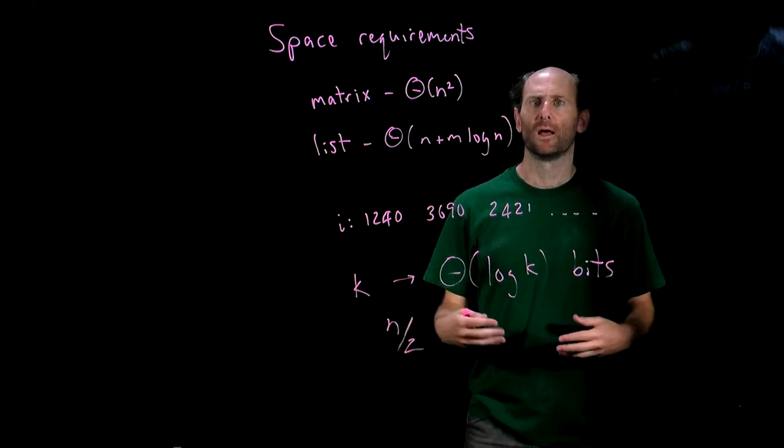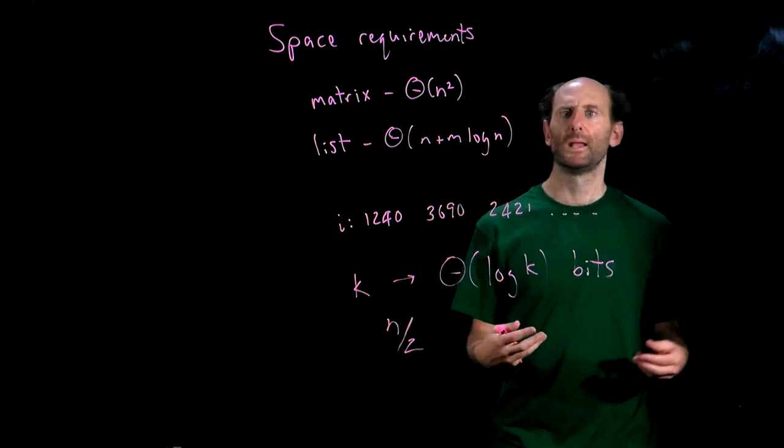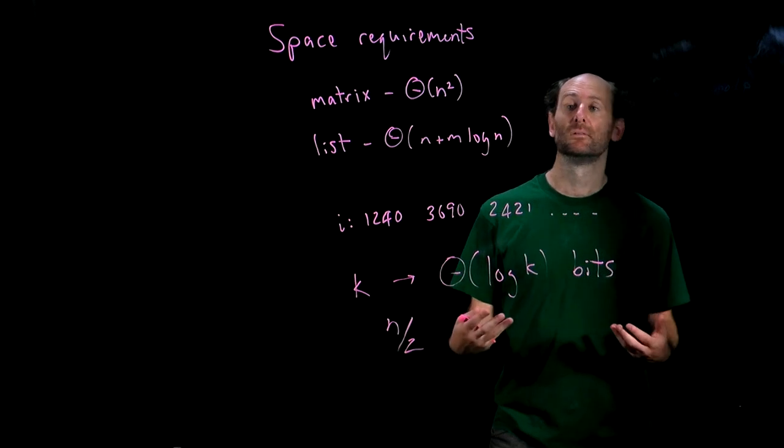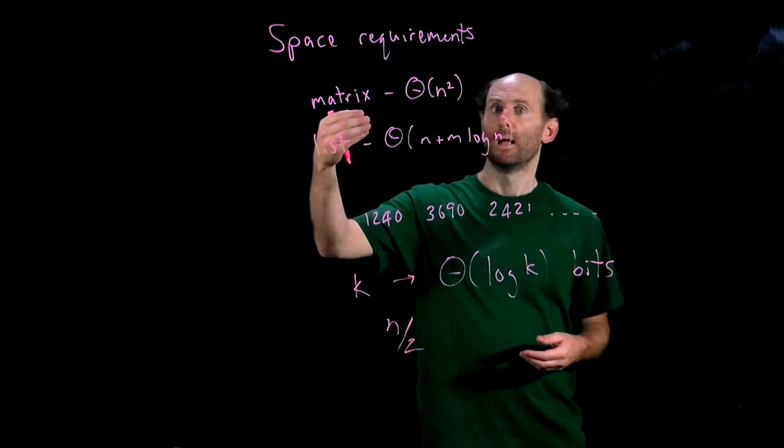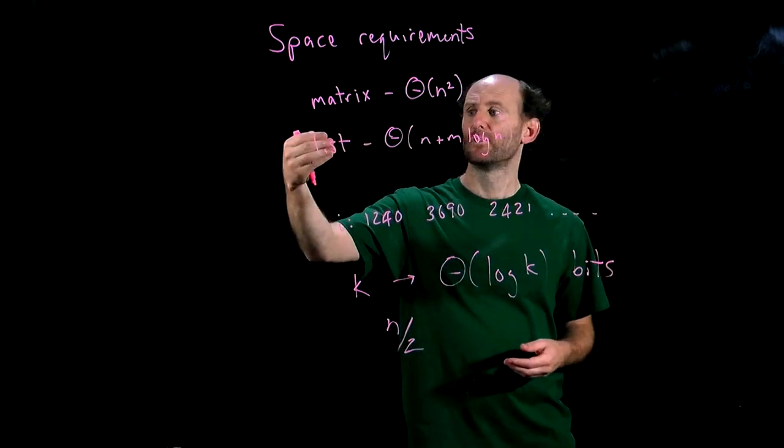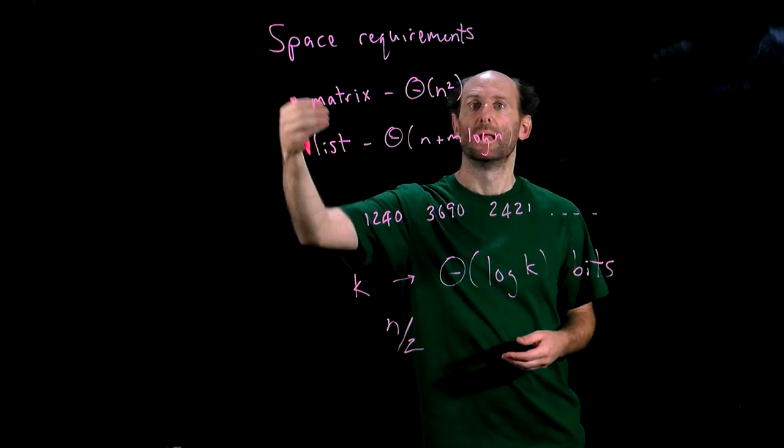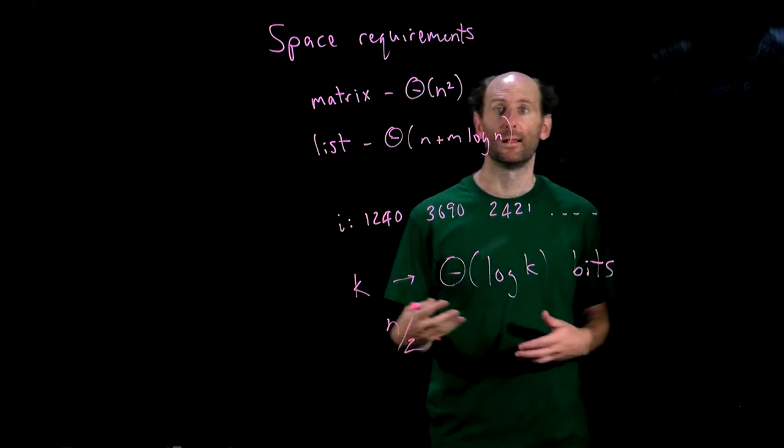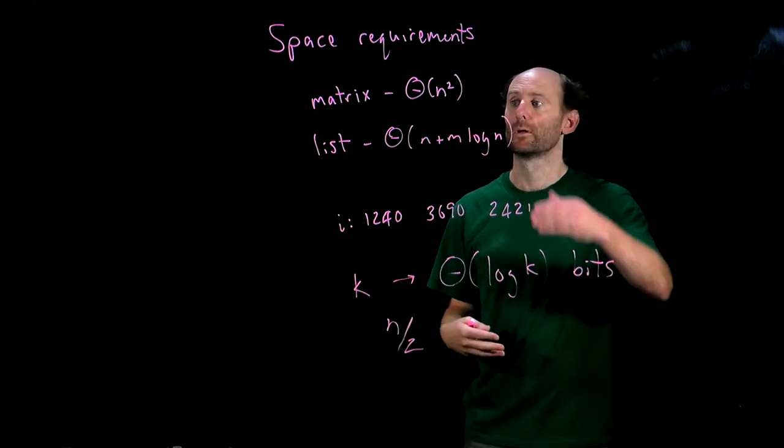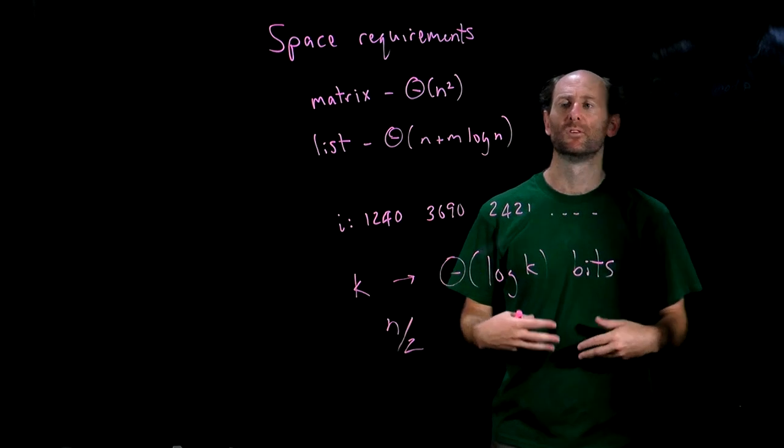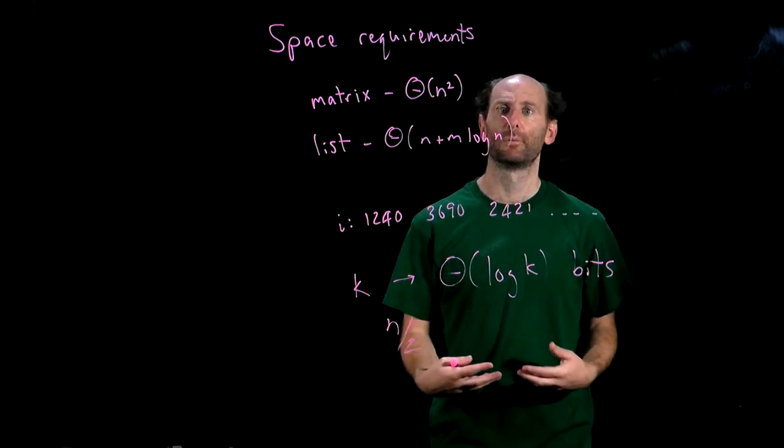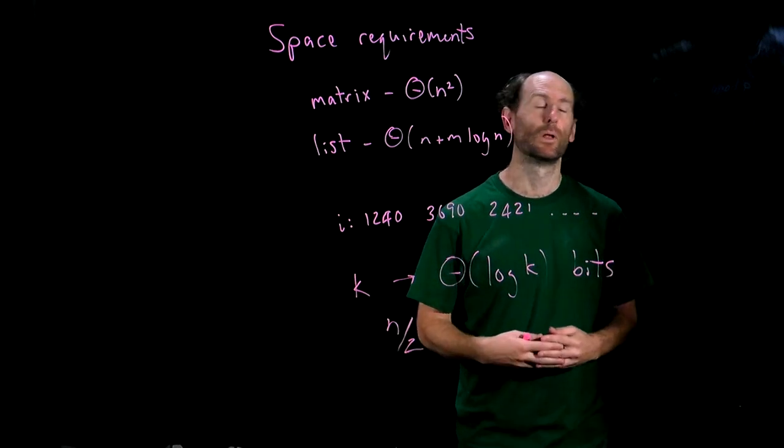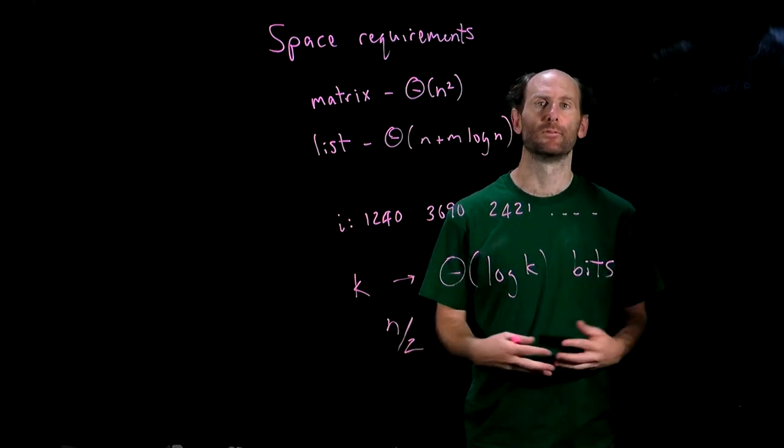Now as always, which implementation is best for a particular problem will depend a lot on the specificities of that problem. I should mention also that implementing the list structure is probably a little bit more work than implementing the matrix structure. But in general terms, and certainly in this course, we'll work mainly with adjacency lists, which typically have superior performance for common operations in terms of speed and space, so long as the digraph is reasonably sparse.